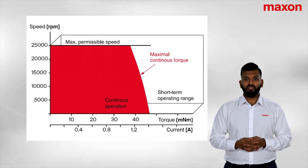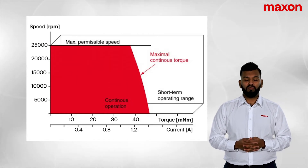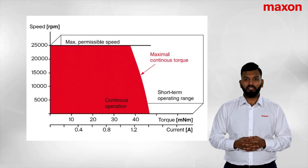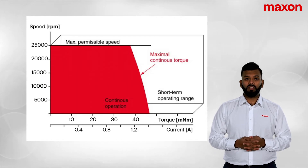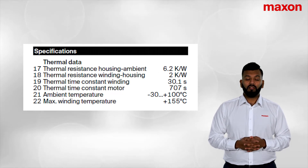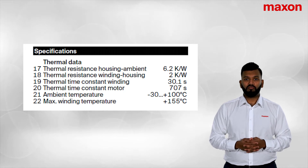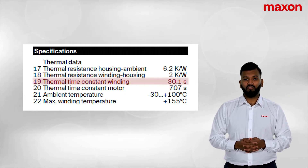As covered in our previous video, there is a relationship between current and torque. Higher currents can be applied to a motor, which will produce higher torque and in turn heat up the winding. It is important that the winding temperature does not exceed its limit, as this can lead to permanent damage to the winding. There are limits to how much a motor can be pushed.